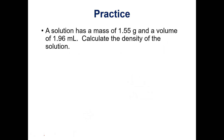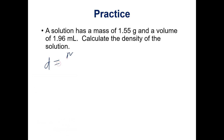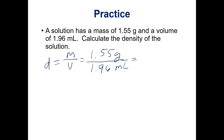Let's look at a couple of examples. Here we have a solution that has a mass of 1.55 grams and a volume of 1.96 milliliters and we want to calculate the density. Density equals mass over volume, sometimes abbreviated as D equals M over V. So if we plug in 1.55 grams divided by 1.96 milliliters, go ahead and take out your calculator.